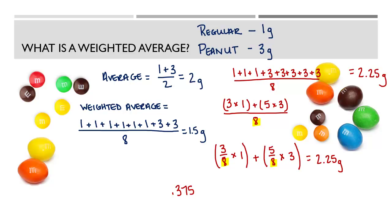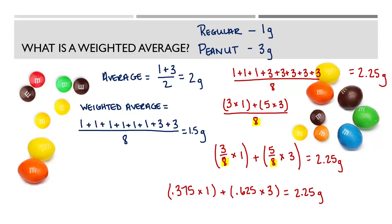A final way to represent this is using decimals or percentages. 3/8 as a decimal is 0.375, multiplied by 1. 5/8 as a decimal is 0.625, multiplied by 3. That also gives us 2.25. So these are four ways of representing the exact same weighted average problem — an average that takes into account quantities in the sample.